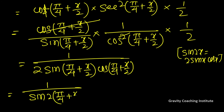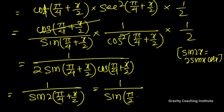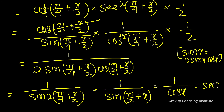Simplifying: 2 multiplied by (π/4 + x/2) gives π/2 + x. So the expression becomes 1 over sin(π/2 + x). Since sin(90° + θ) = cos θ, this equals 1 over cos x, which is sec x. So the final answer is sec x.